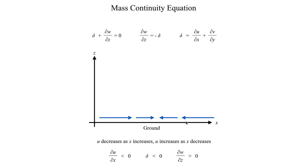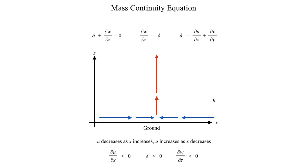Since delta is negative, plugging into dw/dz equals negative delta gives us a positive dw/dz. That means as we go in the positive z direction, w — the vertical wind — must be increasing. If we assume the vertical wind is zero at ground level, then as we go to higher levels of z, w increases upward, producing rising motion. This is the mathematical substantiation of the concept we introduced earlier: surface convergence, enhanced by friction, leads to rising motion.